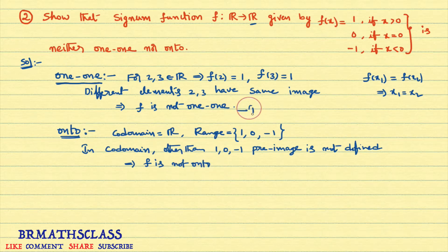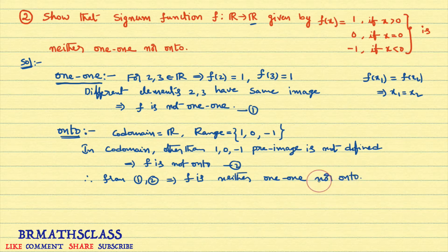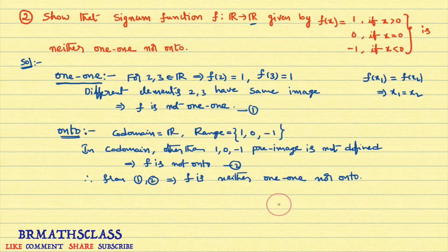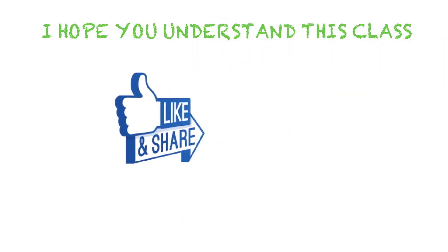From 1 and 2, we can say that f is neither one-one nor onto. This is very easy — you just need to understand the concepts of one-one function and onto function. If you don't know the definitions, you can find the playlist of functions in my channel. I hope you understand this class.